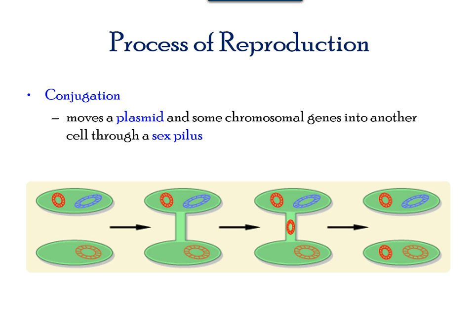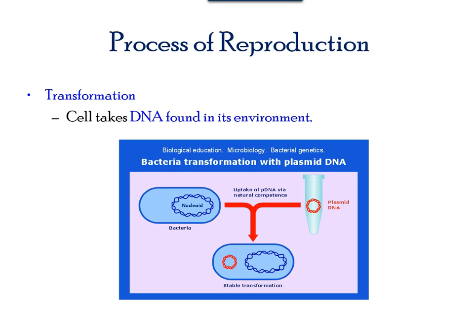Bacterial cells have a unique process of transferring genetic material in a horizontal pattern, also considered lateral gene transfer. There are three ways this can happen. The first is conjugation, where DNA is transferred from one prokaryotic cell to another by means of a connection called a pilus. The transforming DNA is usually a plasmid that may contain a chromosomal piece or a segment of a gene. In transformation, a prokaryotic cell can take up DNA found in its environment, either from living or dead cells, and incorporate the new DNA into its chromosome. This process is used extensively in genetic engineering, where a specific characteristic can be introduced into a cell to make numerous copies.